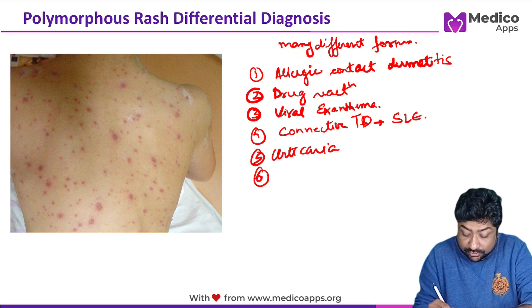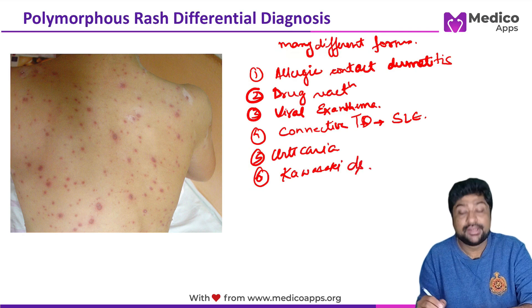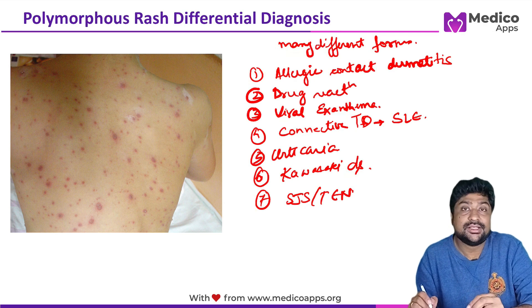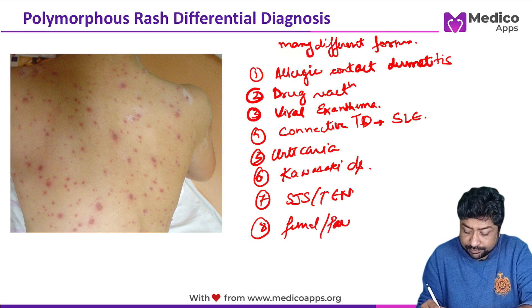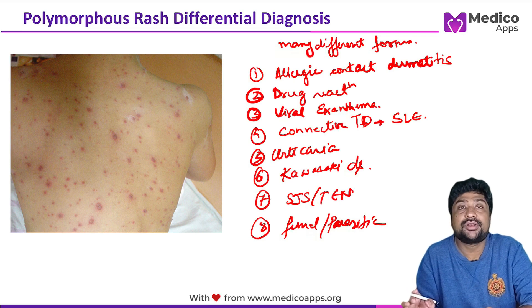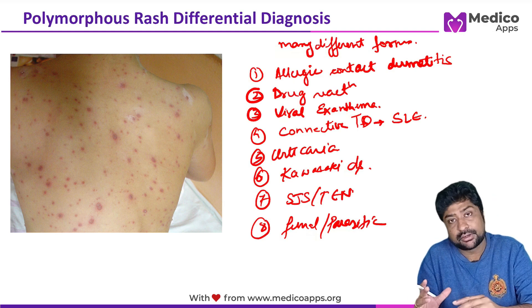A very important differential in children with polymorphous rash is vasculitis — specifically Kawasaki disease. You can also have severe drug reactions like Stevens-Johnson syndrome or toxic epidermal necrolysis, which are very important to consider. Additionally, fungal infections and parasitic infections are also possible causes. These are some of the most important differentials for polymorphic rashes.